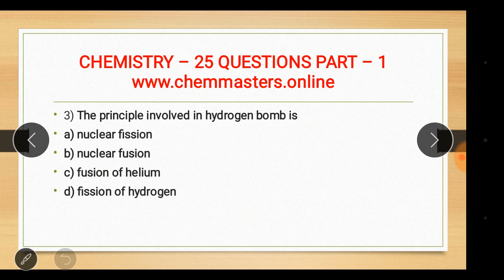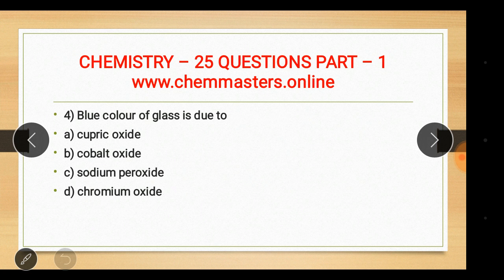Question three: the principle involved in a hydrogen bomb is nuclear fusion. In a hydrogen bomb, hydrogen molecules are fused to produce helium. In contrast, an atomic bomb operates on the principle of nuclear fission.